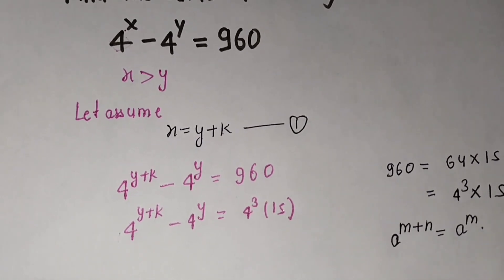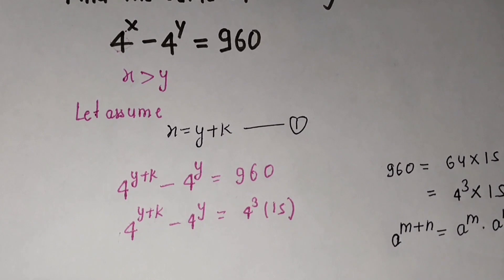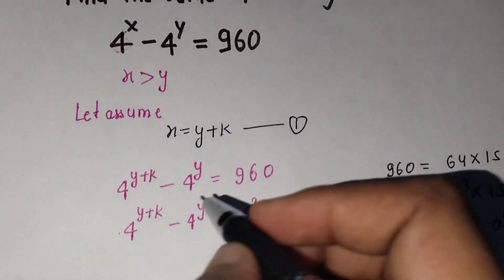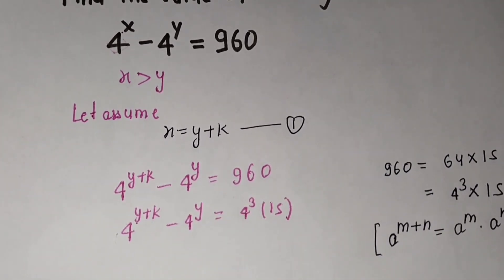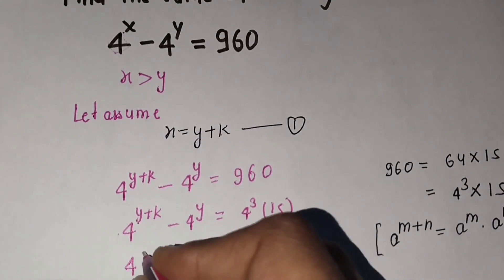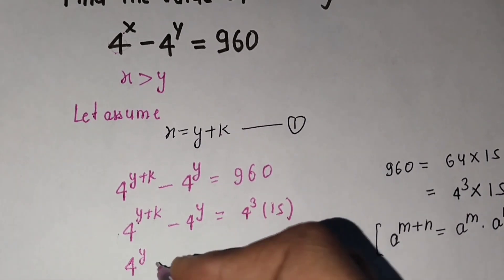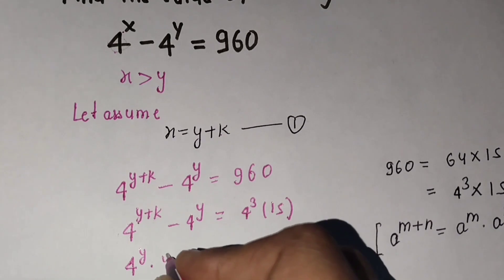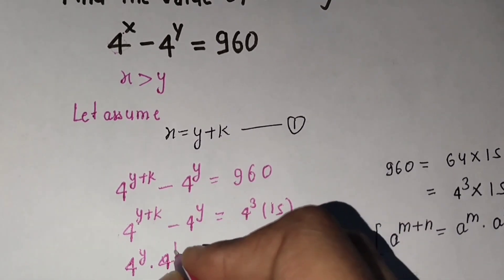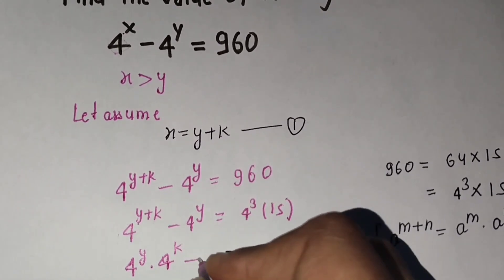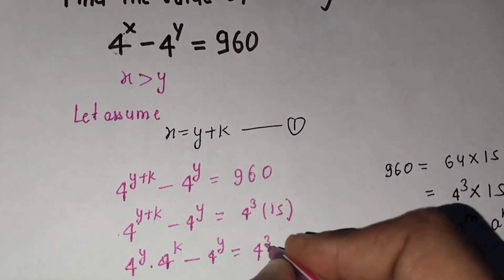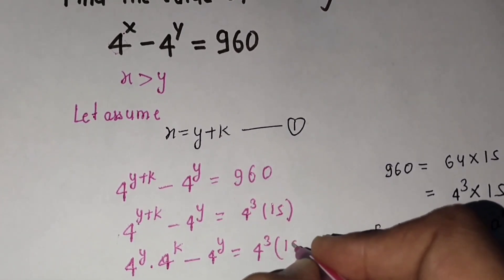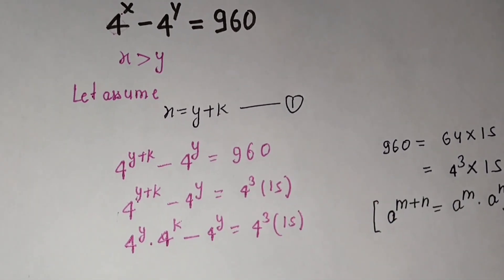One identity I use here: a raised to power (m plus n) equals a raised to power m times a raised to power n. Using this identity, I write 4^(y+k) as 4^y times 4^k. So the expression becomes 4^y times 4^k minus 4^y equals 4^3 times 15.